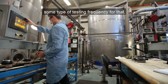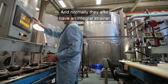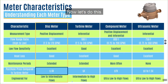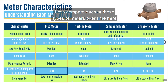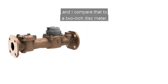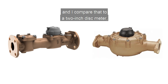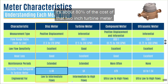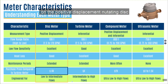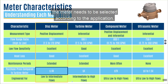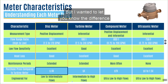Fifth, maintenance periods: I would categorize these as extended. There's not a lot of maintenance required for a positive displacement nutating disc meter — normally some testing frequency, and they have an integral strainer built in, so there's minimal upkeep. Sixth and seventh, comparing to a turbine meter: a two-inch disc meter costs approximately 80% of the cost of a two-inch turbine meter, so you save a little money. However, cost savings shouldn't drive meter selection — the meter must be selected according to the application. These meters are designed for low to intermediate flows, not high flows.